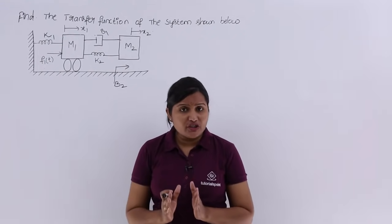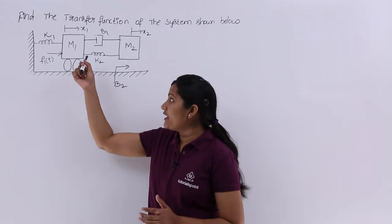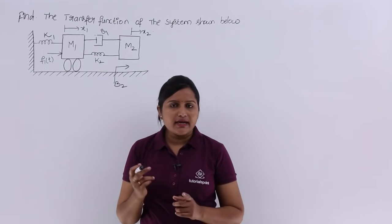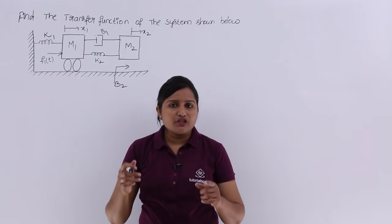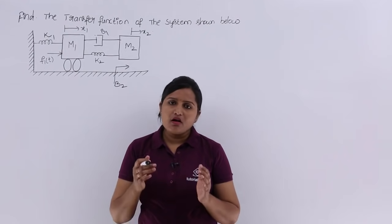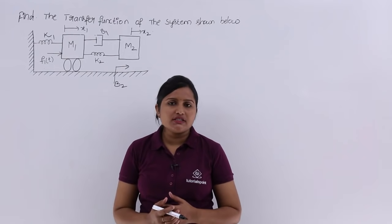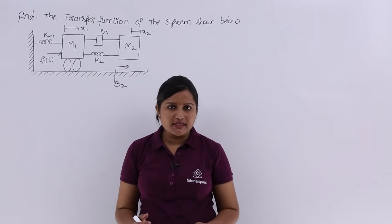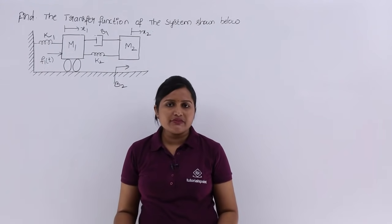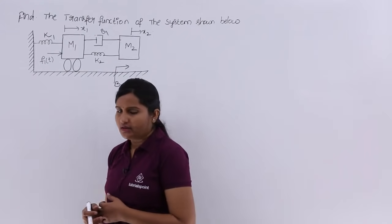First, we need to draw the free body diagrams of each mass. Here we have two masses — m1 and m2 — so we need to draw free body diagrams for both. After drawing the free body diagrams, we write the force equations. Then by taking the Laplace transform of those force equations, we will get the transfer function of the system.